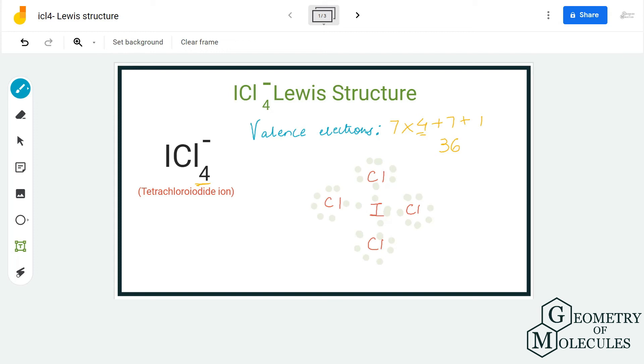The thing is, iodine is a period 5 element, which means it can accommodate more than eight electrons in its outer shell. So these four electrons will be placed on the iodine atom. You might wonder if this is correct, but it is.